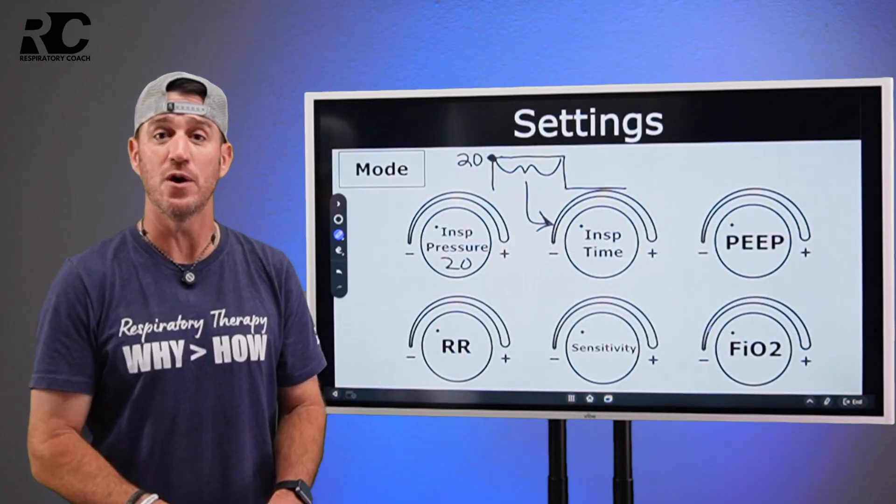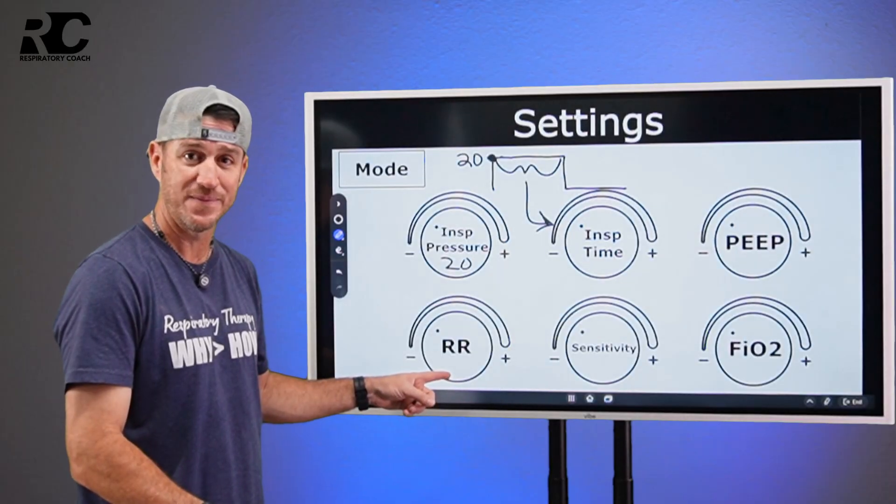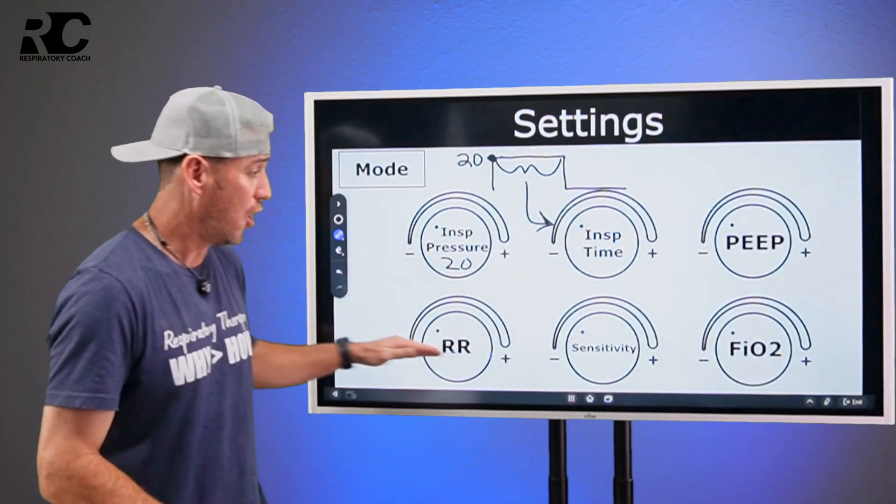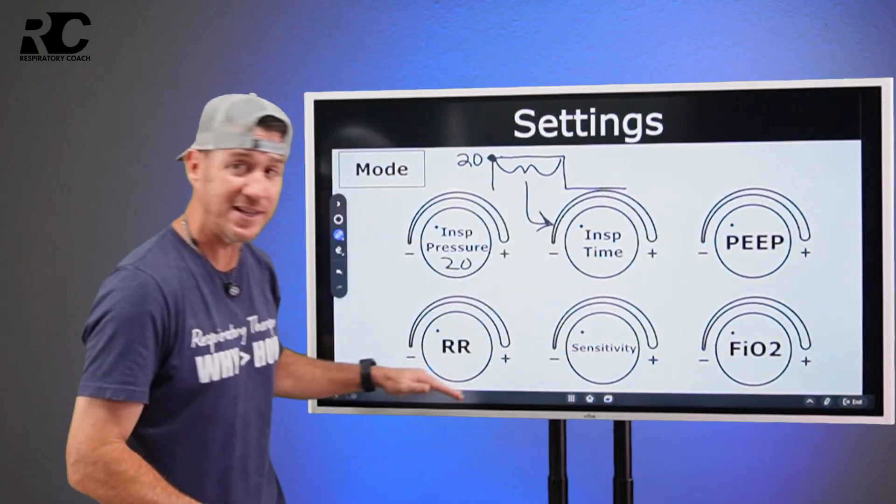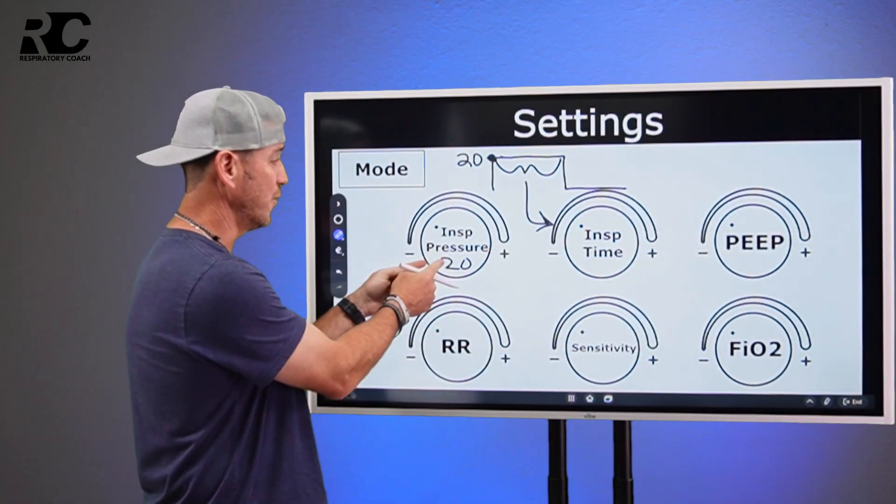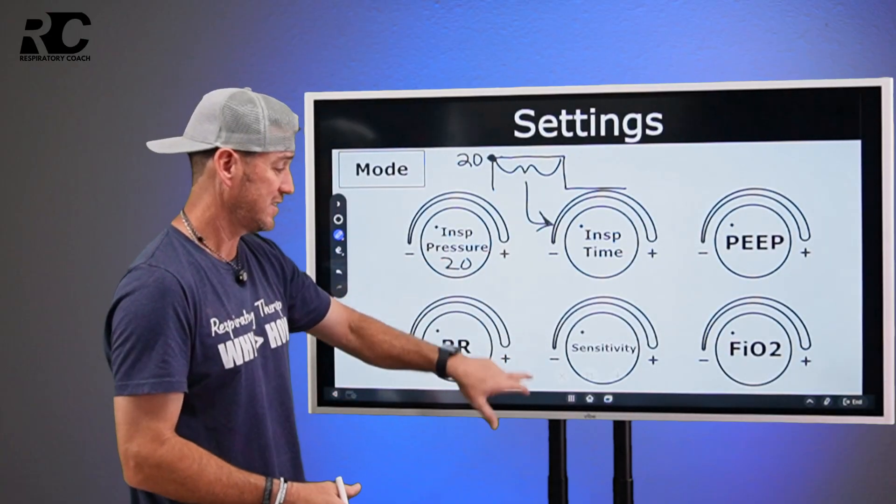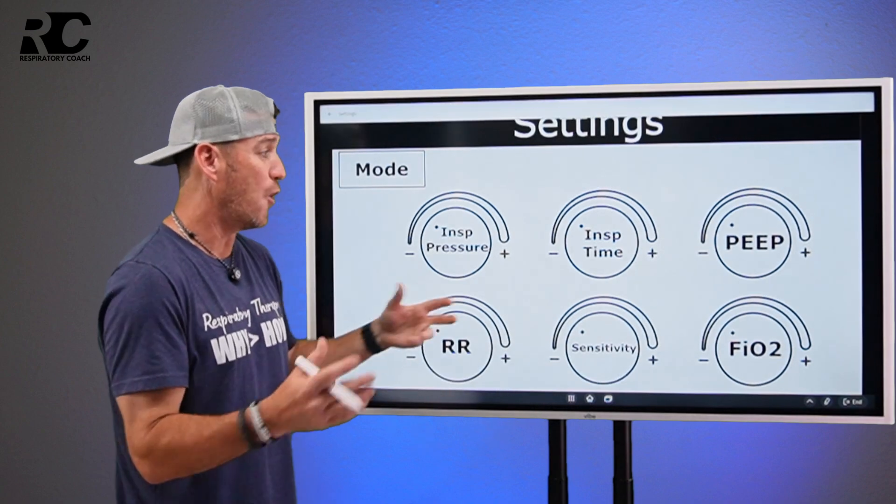...this, that right there is your eye time. It's your inspiratory time. And then once again, you say, okay, well, how often is that going to happen? Brings us back to respiratory rate. Okay. So this is pressure control, all the same four settings, standard settings to change. What are we doing for how long? That's the difference. That's the only difference.